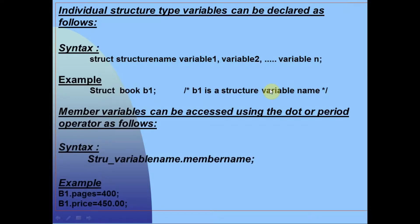Individual structure type variables can be declared as follows: syntax is structure_name variable1, variable2, up to variable N. Example: struct is the keyword, book is the structure name, and b1 is the object — that is the structure variable name.